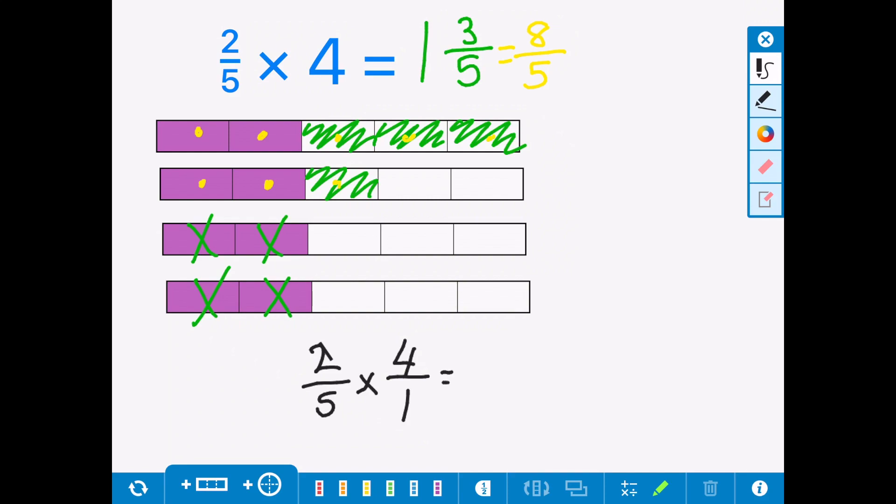Then we would do 2 × 4, which gives us 8, and 5 × 1, which gives us 5. So you can see how this is the same as this.